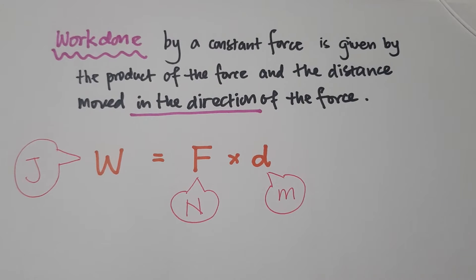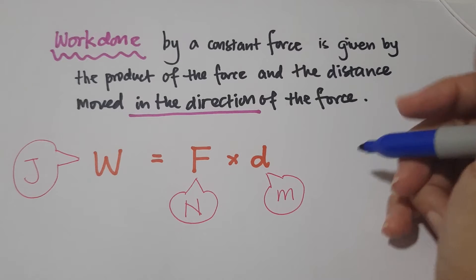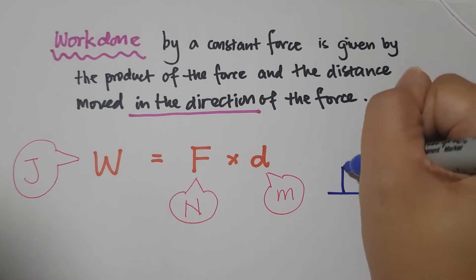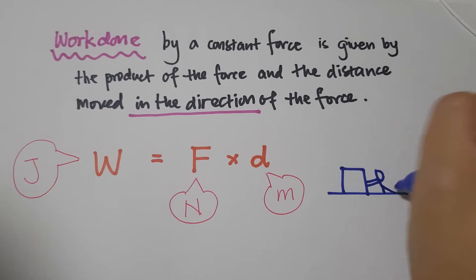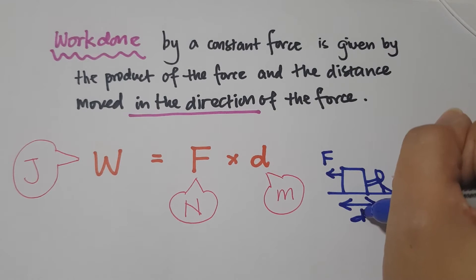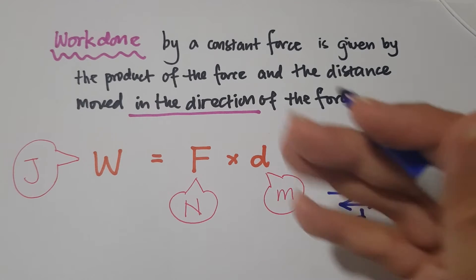Let's take a look at some examples. If there's a box on the floor and the person is pushing it and the box moves, the force exerted by this person on the box times the distance moved in the direction of the box, multiply them and you will get the work done.